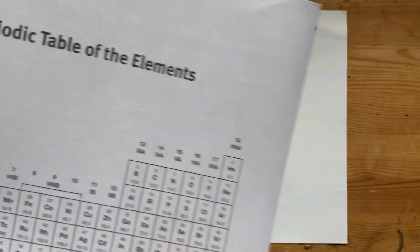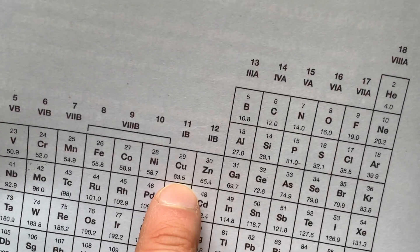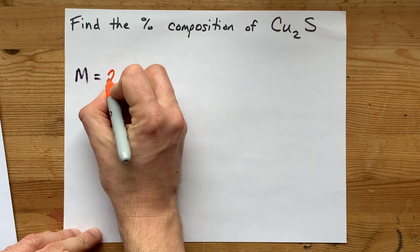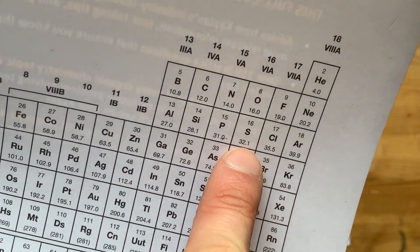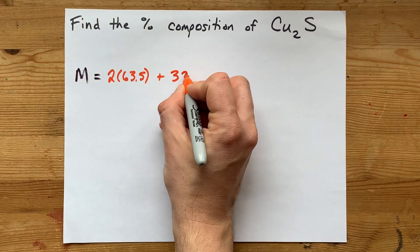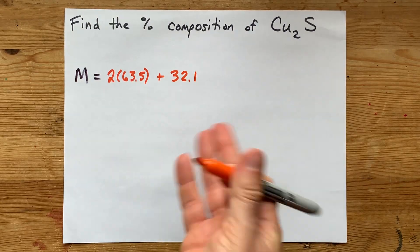I have two coppers here. Each copper contributes 63.5, so two 63.5s, along with a sulfur which contributes 32.1. Now I'm aware that my periodic table is terrible.